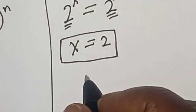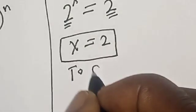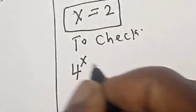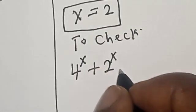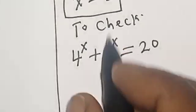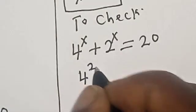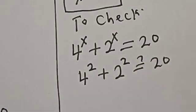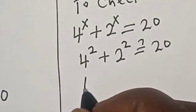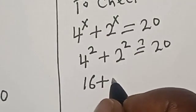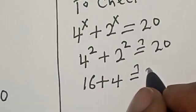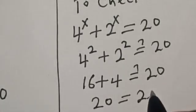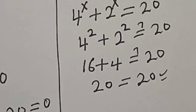Let's check to confirm if our answer is right. To check: 4 raised to power s plus 2 raised to power s is equal to 20, at s equal to 2. 4 raised to power 2 plus 2 raised to power 2 should equal 20. 4 squared is 16, plus 2 squared is 4, should equal 20. 16 plus 4 is equal to 20, which satisfies the equation at s is equal to 2.